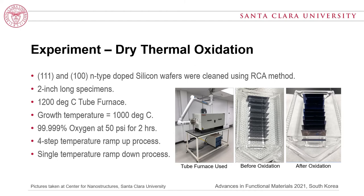Coming to the experiment: we performed dry thermal oxidation on 111 plane and 100 plane n-type doped silicon wafers. These silicon wafers were cleaned using the standard RCA method. The picture before oxidation shows 111 and 100 plane cleaned specimens stacked on a glass board. Two-inch long specimens were oxidized in a tube furnace capable of operating up to 1200°C. Oxidation was carried out at 1000°C with 99.999% purity oxygen at a pressure of 50 psi for a duration of two hours.